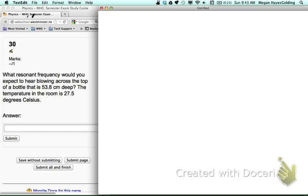First thing you need to realize here is that a bottle is an example of a closed-tube resonator. Closed-tube resonators will resonate on the odd-numbered harmonics only.